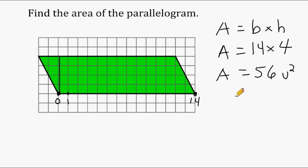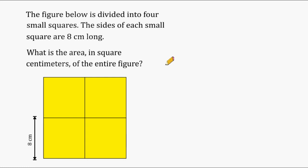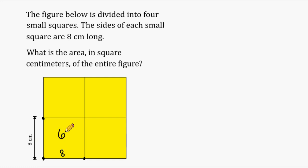This problem reads that the figure below is divided into 4 small squares, and the sides of each small square are 8 centimeters long. What is the area in square centimeters of the entire figure? Each small square has a side of 8 centimeters, so its area is 8 times 8, which is 64. Since all four squares are congruent, we multiply 64 by 4, giving us 256 square centimeters.